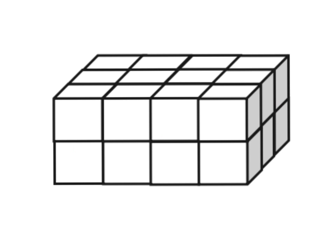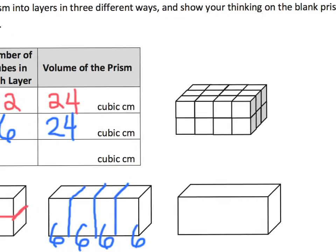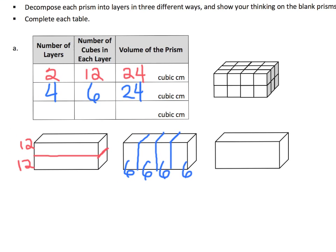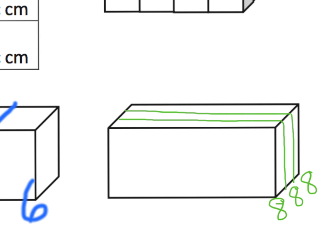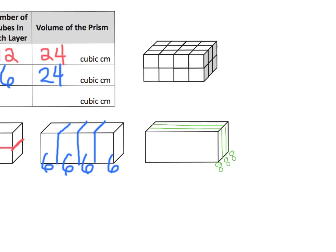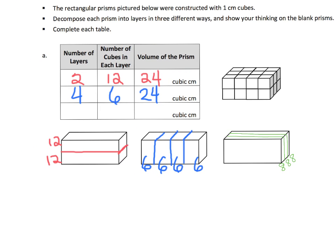Two cuts makes three pieces of bread. We're going to cut right here and down, and right here and down. So we've got three slices of bread — we made two cuts but created three slices of bread — and there are eight cubes in each of those slices. So we have three layers with eight cubes in each layer, and again our volume is 24 cubic centimeters.